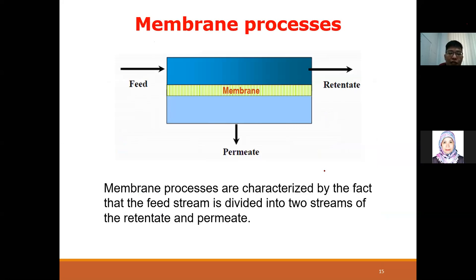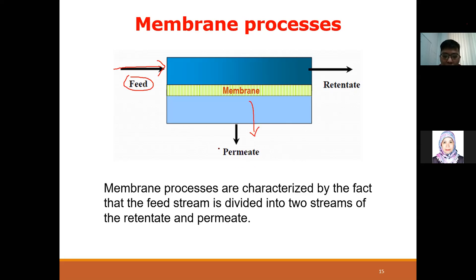Looking at membrane process nomenclature: the feed is the water that passes through a membrane system - it can be secondary effluent, sea water, or any type of water. The water that comes out from the membrane - the clean water - some people call it permeate, some call it product water. These are the names people use.